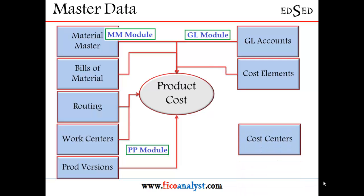Then you have cost centers. There is a relation between cost centers and work centers — a group of work centers can refer to a particular cost center. The cost center is typically a department, a production department, which performs activities on the transformation of a material from raw materials to the finished product.